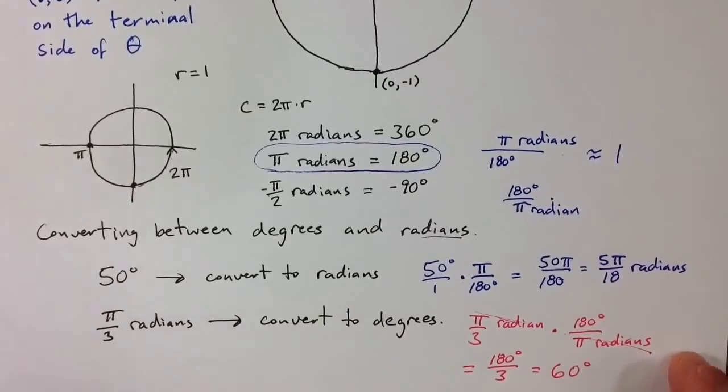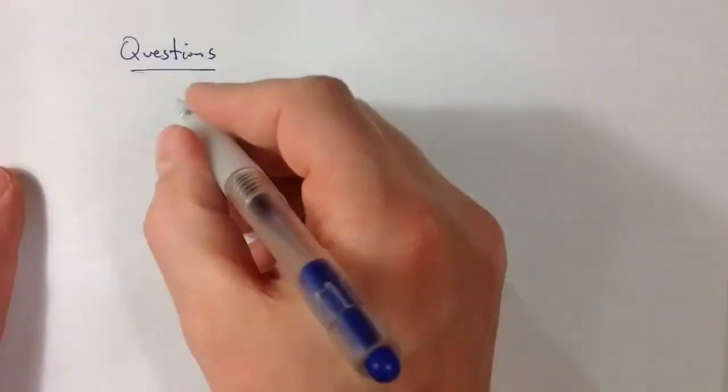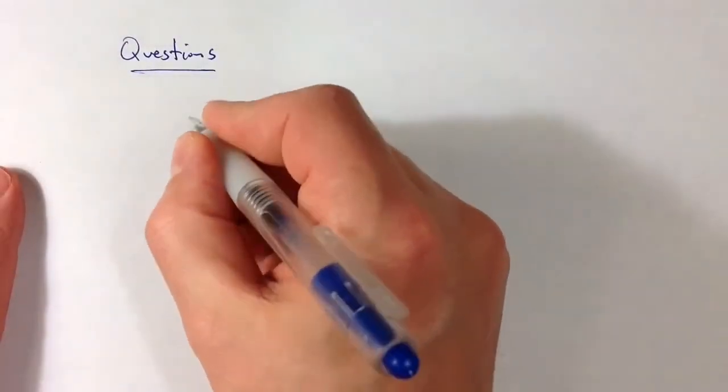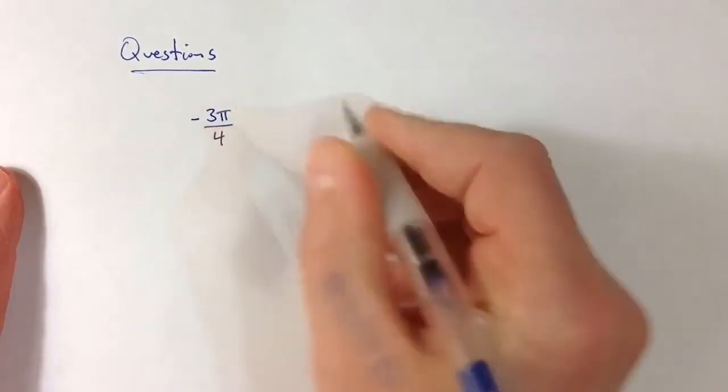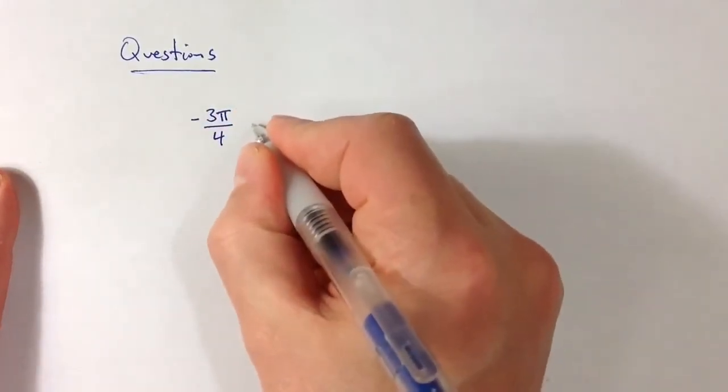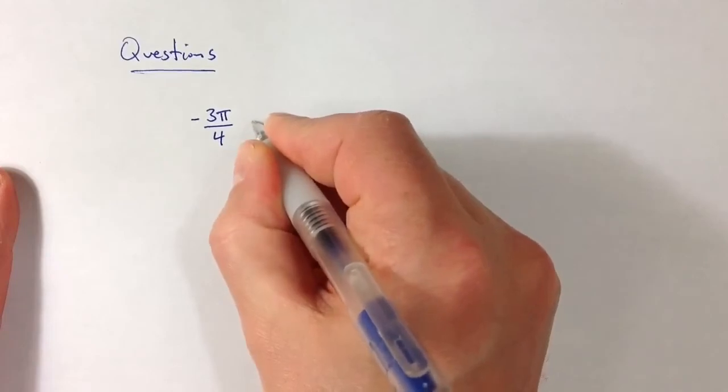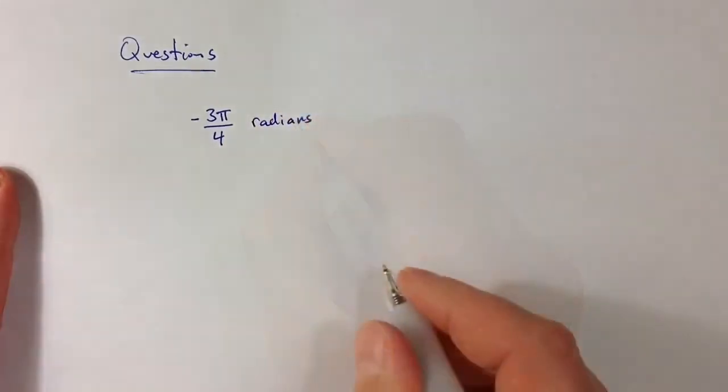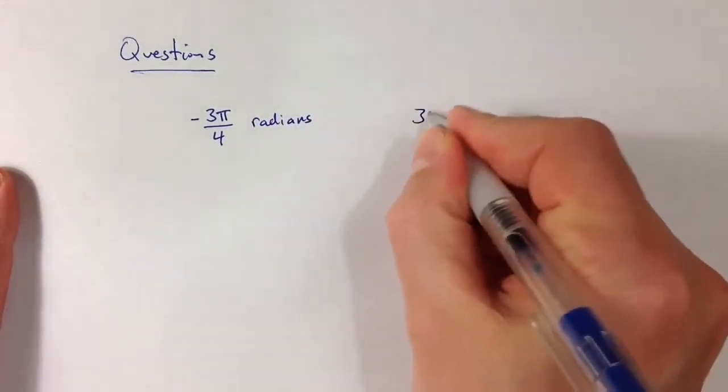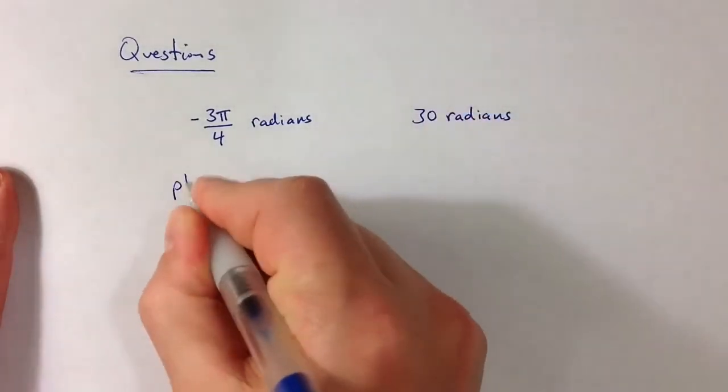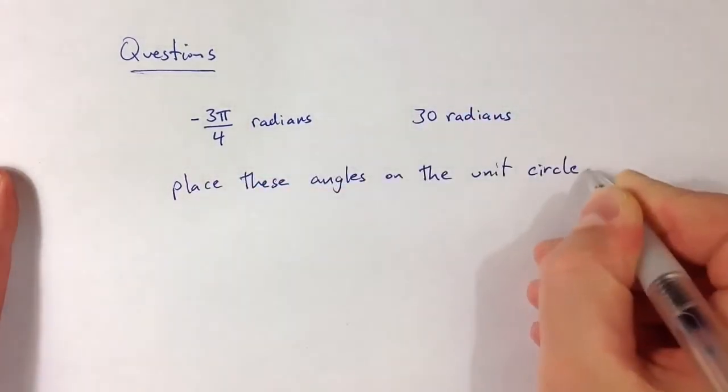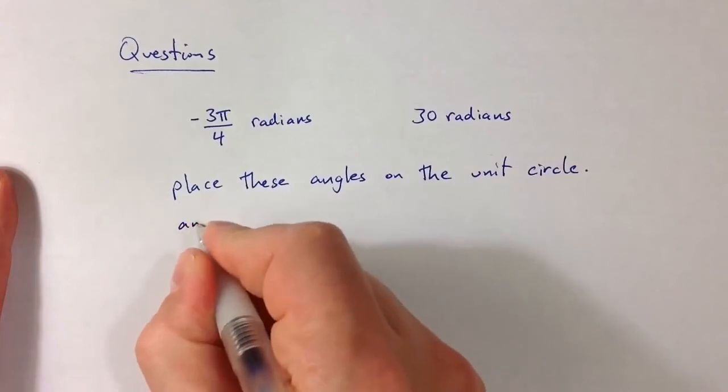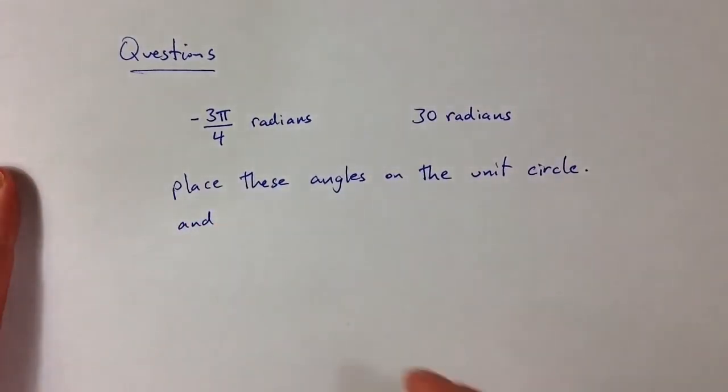So let me end with a couple of questions. Take a moment, try to think about the position of negative 3π over 4 radians, and 30 radians. Place these angles on the unit circle, and along with that try to convert them to degree measure.